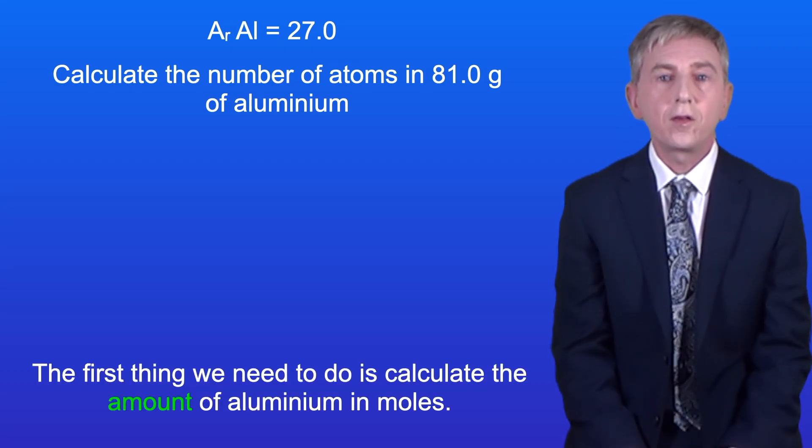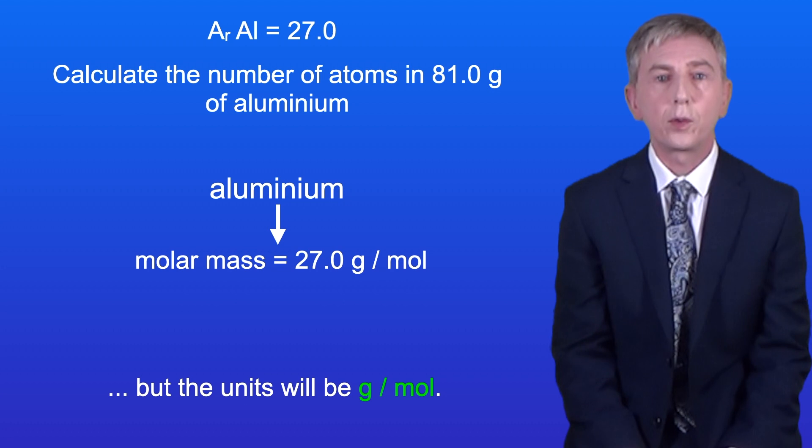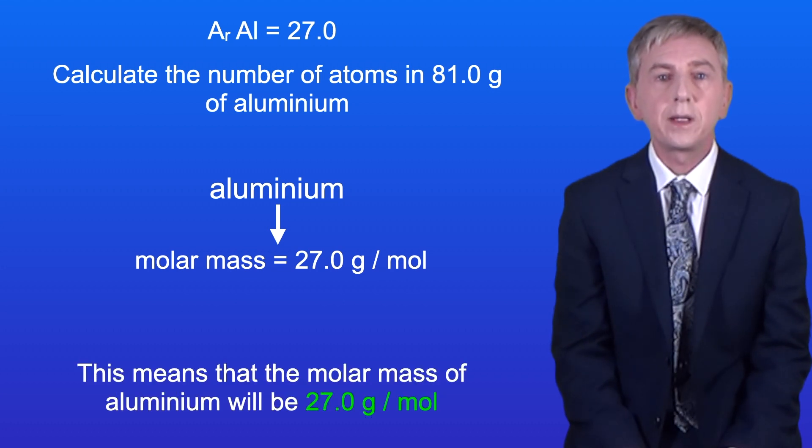Okay the first thing we need to do is calculate the amount of aluminium in moles. Aluminium is an element so the molar mass will have the same value as the relative atomic mass but the units will be grams per mole. This means that the molar mass of aluminium will be 27.0 grams per mole.